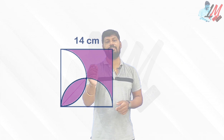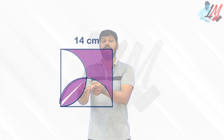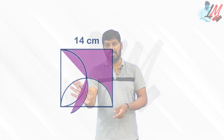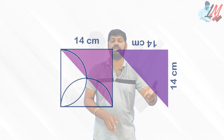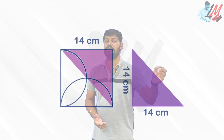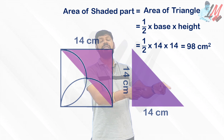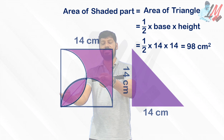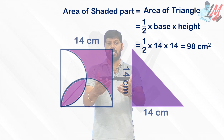Most people think this is a very difficult problem, but it can be solved very elegantly. From the vertex, joining the two intersection points of both semicircles forms a leaf shape. Taking each half of the leaf and placing it on either side reveals a small right triangle. For this right triangle, the two sides are 14 centimeters each. Applying the formula: area = ½ × base × height = ½ × 14 × 14 = 98 cm². This equals the area of the shaded region.